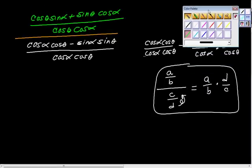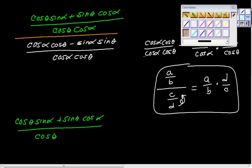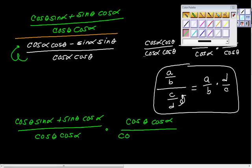So what we had was, applying this rule up here, we would have cosine theta sine alpha plus sine theta cosine alpha over cosine theta cosine alpha, times the reciprocal of that. So we get cosine theta cosine alpha over cosine alpha cosine theta minus sine alpha sine theta.